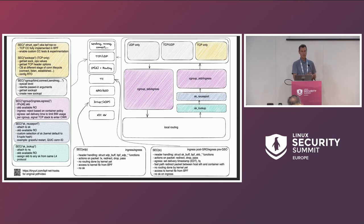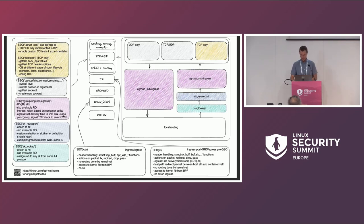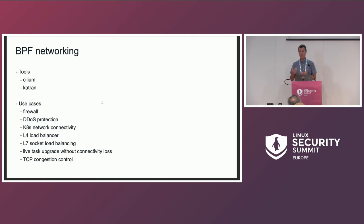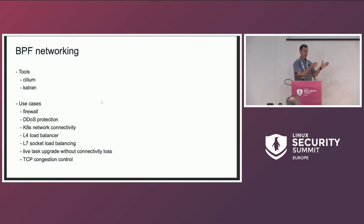The main use case for Facebook at that time was absorbing these distributed denial-of-service attacks, which were many gigabits per second across the globe. Over the years, the networking use cases grew a lot. Now Cilium is the dominant plugin for Kubernetes. It's used for networking connectivity and security from the networking perspective — they can analyze traffic and even do Layer 7 HTTP-level understanding of where requests are coming from and block based on security policy.